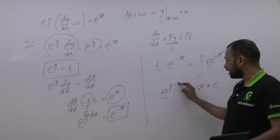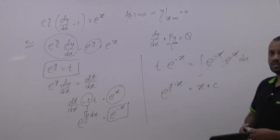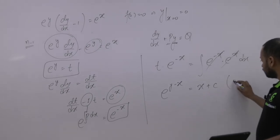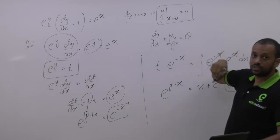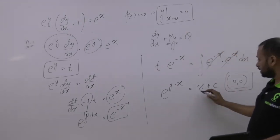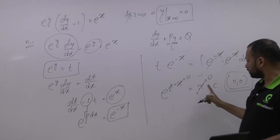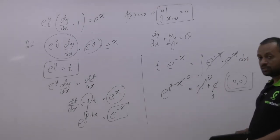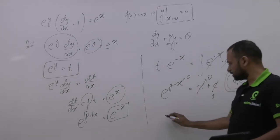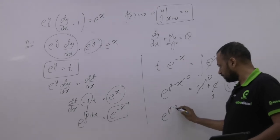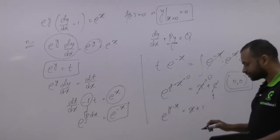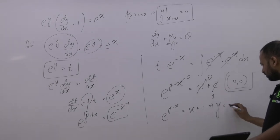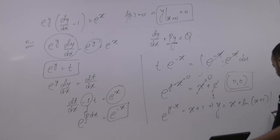t, e raised to the power y, minus x, this is done, okay. Now, 0, 0, 0, 0, equal to 0, 0, so, 0. e raised to the power 0, 1, c value, so, e raised to the power y, minus x, x, plus 1. He is equal to x, x.